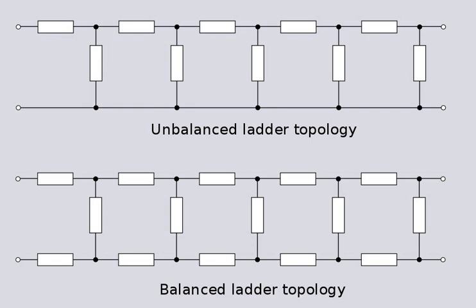Ladder topology can be extended without limit and is much used in filter designs. There are many variations on ladder topology, some of which are discussed in the electronic filter topology and composite image filter articles. The balanced form of ladder topology can be viewed as being the graph of the side of a prism of arbitrary order. The side of an anti-prism forms a topology which, in this sense, is an anti-ladder. Anti-ladder topology finds an application in voltage multiplier circuits, in particular the Cockcroft-Walton generator.